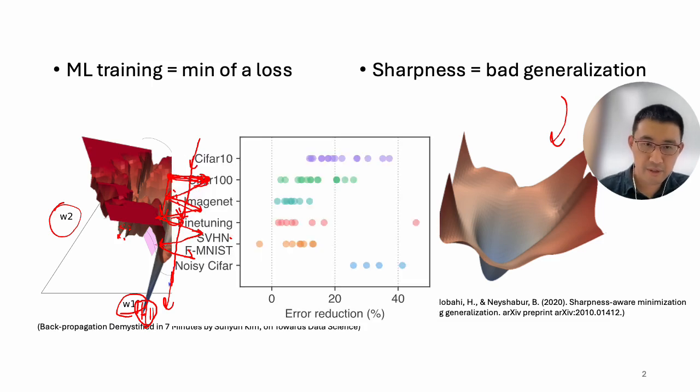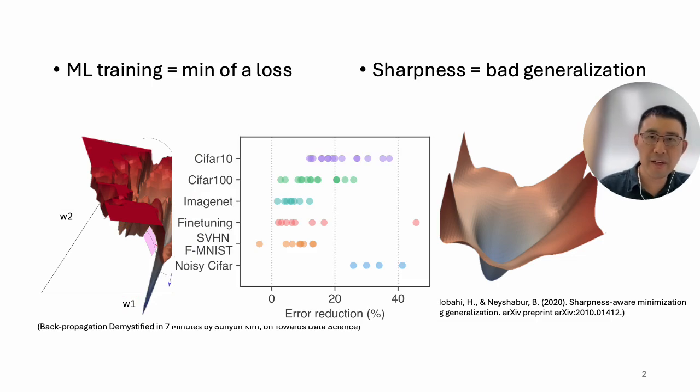So this is their result. Let me raise a board. They say that by using this kind of method, they got this good result that the errors of model trained using this method on the image classification on CIFAR 10, CIFAR 100, et cetera, their performance increased from zero to 40%, or their errors got reduced anywhere between zero to 40%, which was a huge improvement.